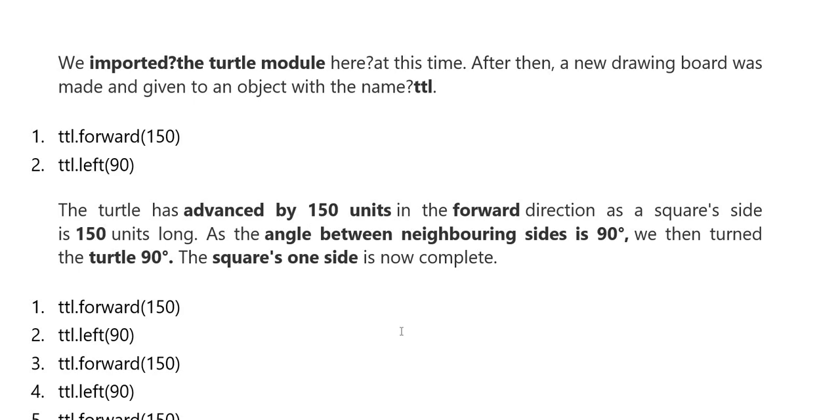Turtle advanced by 150 units in the forward direction. The square side is 150 units long. The angle between neighboring sides is 90. Then, we turn the turtle 90 degrees. The square, which we have one side, is now complete.